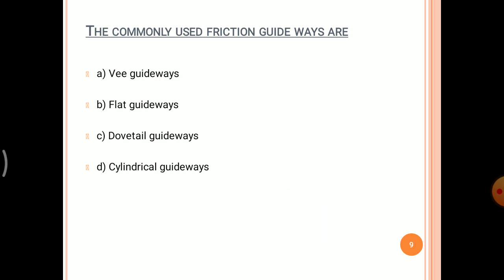The commonly used friction guideways are V-guideways, flat guideways, dowel guideways, and cylindrical guideways. These are the four types of friction guideways, and in all of them there exists sliding friction between the two surfaces.